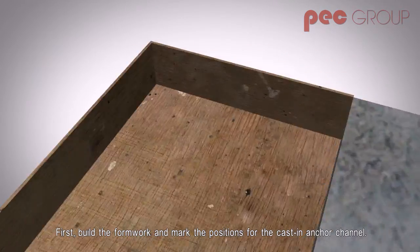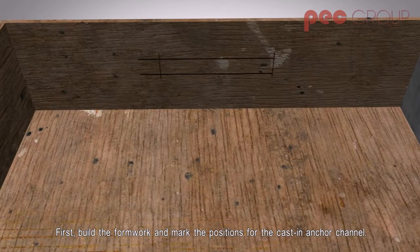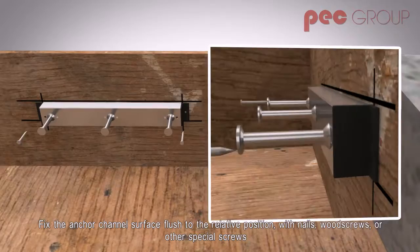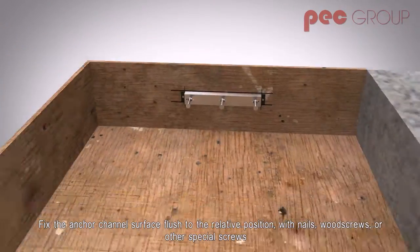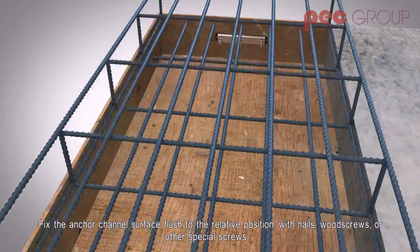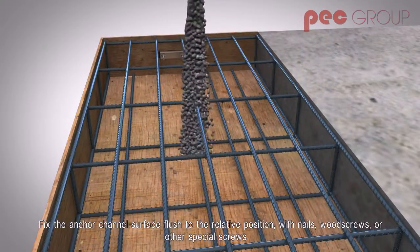First, build the formwork and mark the positions for the cast-in anchor channel. Fix the anchor channel's surface flush to the relative position with nails, wood screws or other special screws.